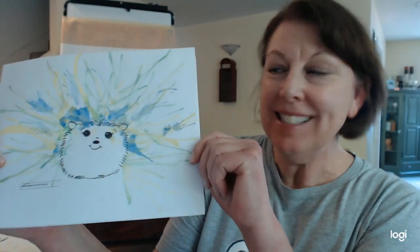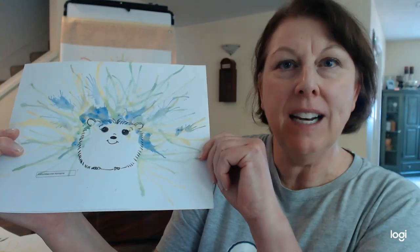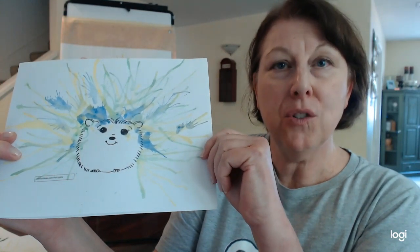Hey everyone, it's Eileen with KidFunIdeas.com and I have a quick and simple paint project for you today. We're making little painted porcupines using thinned out paint and a straw to make the different tendrils that come out of the porcupine.